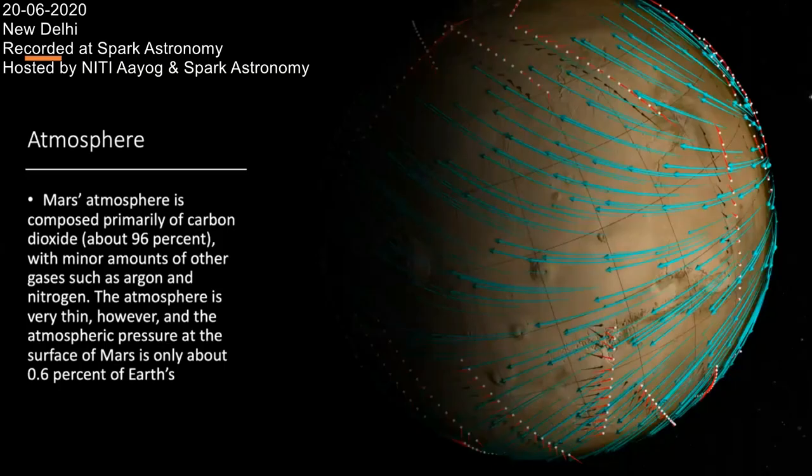The atmosphere is one of the most important things about Mars. The atmosphere on Mars is composed primarily of carbon dioxide — 96% — with minor amounts of other gases such as argon and nitrogen. The atmosphere is very thin, and the atmospheric pressure at the surface of Mars is only about 0.6% of Earth's.